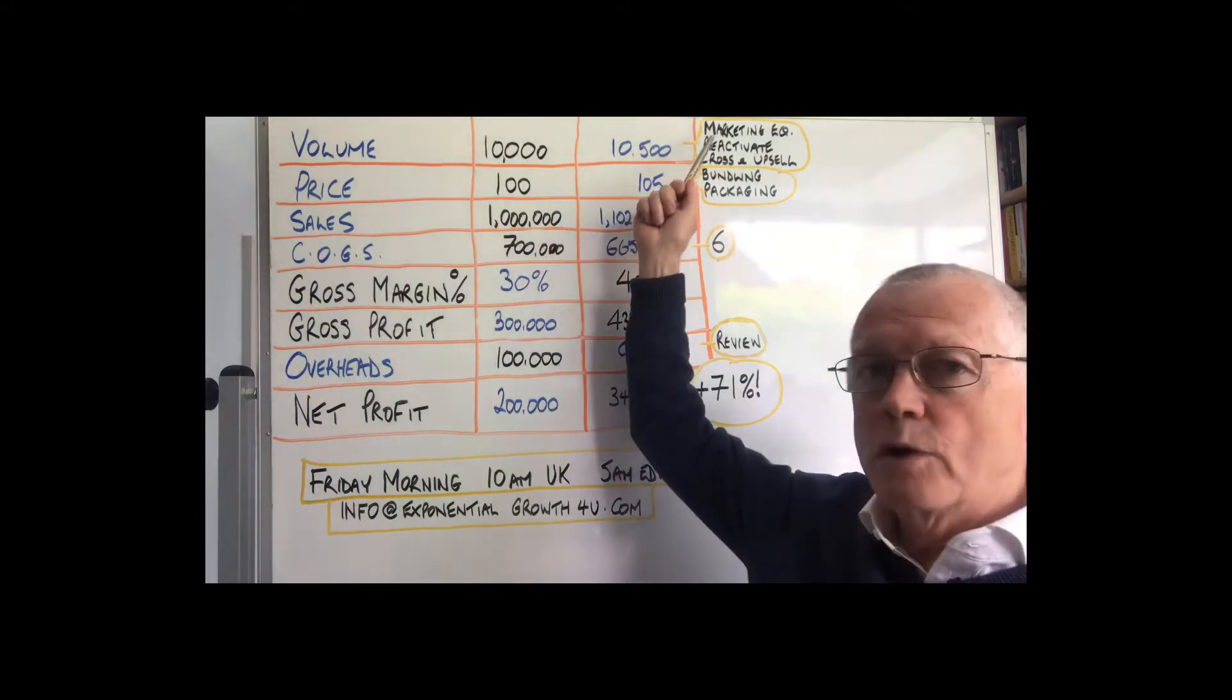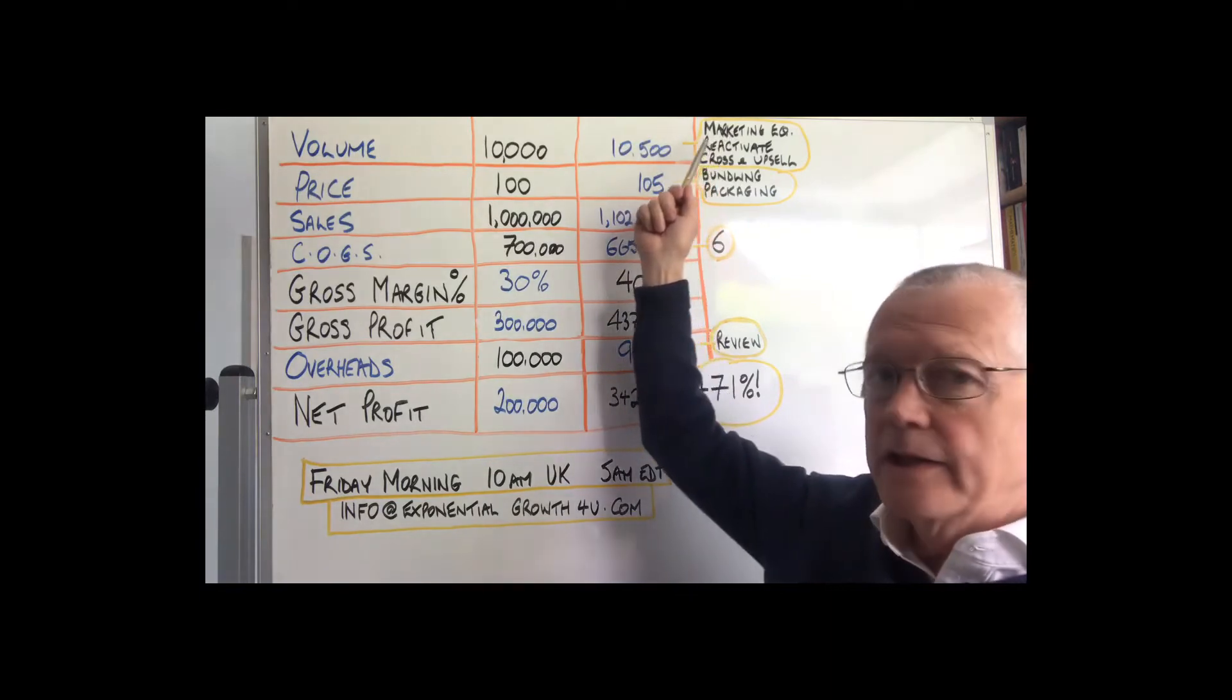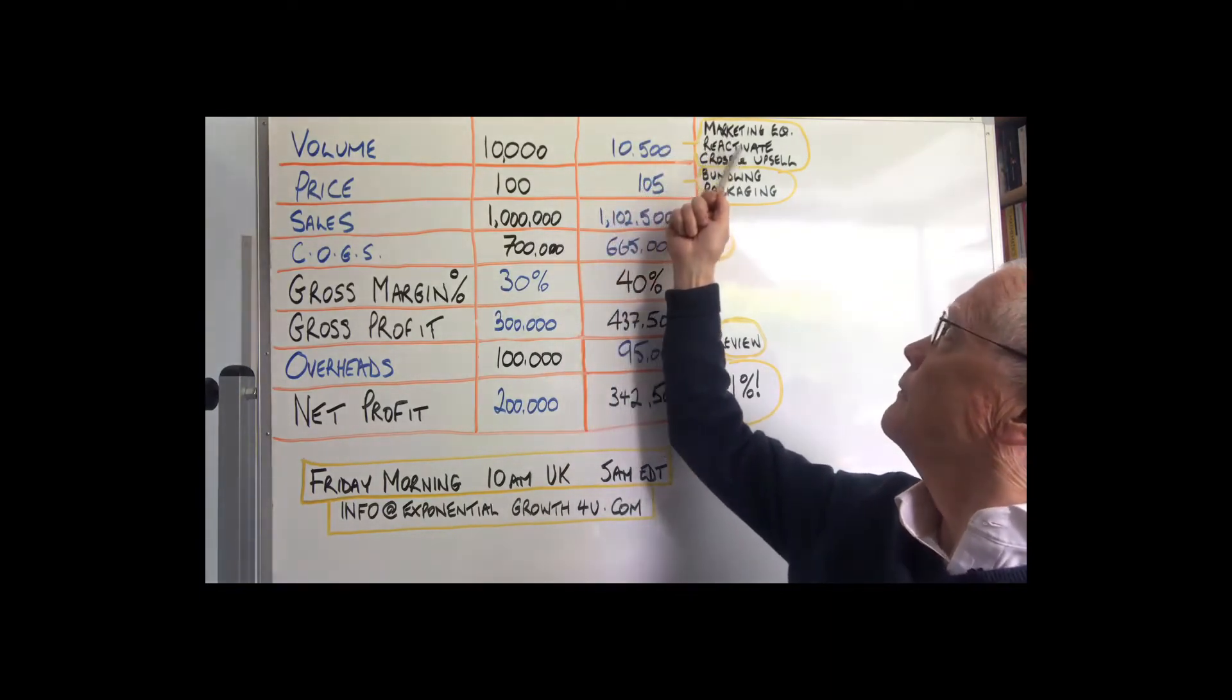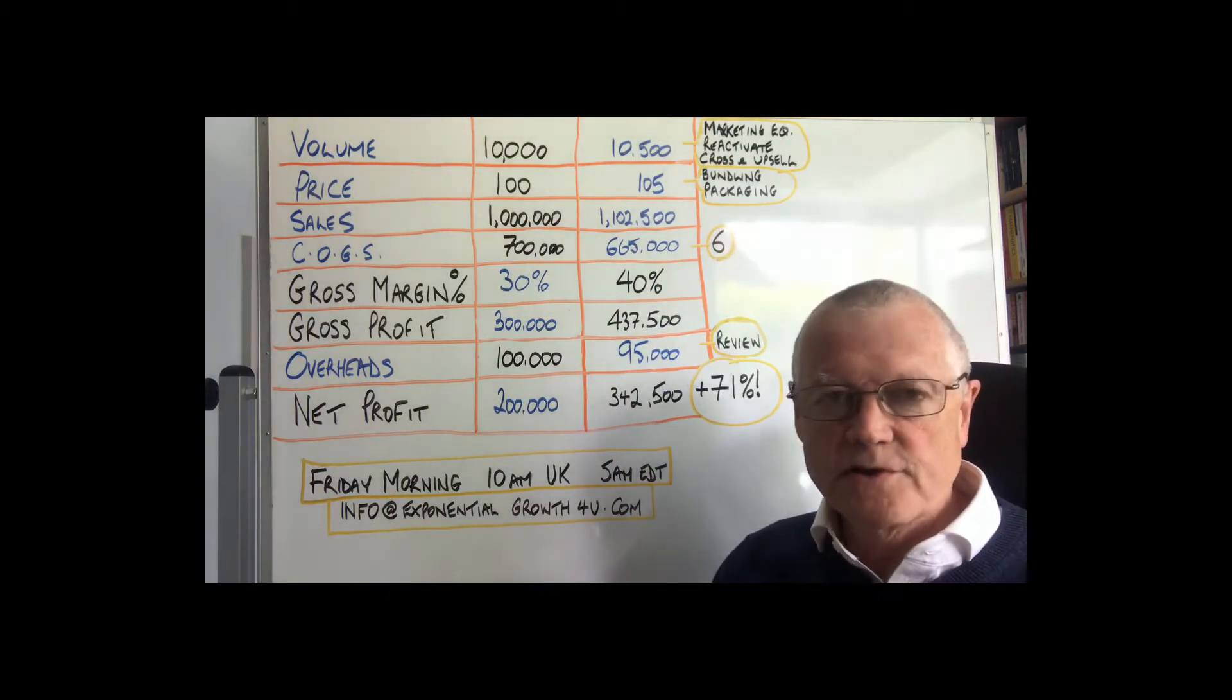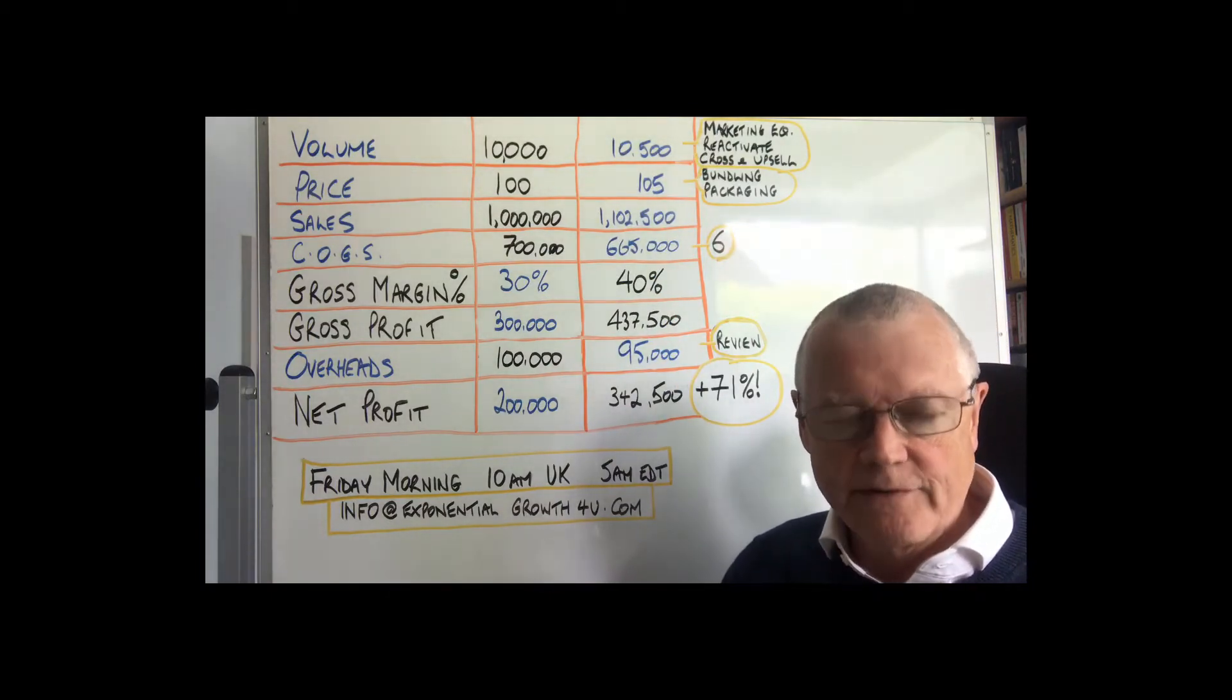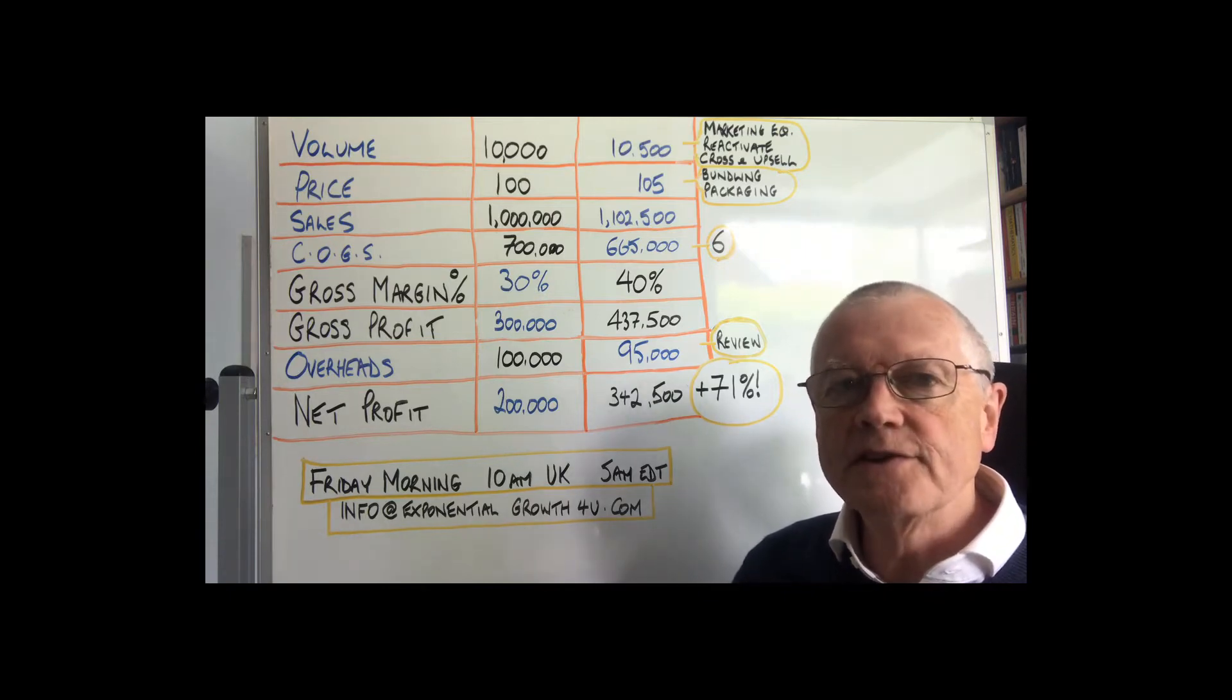Now how could we do that? Well, we could sell more volume by reactivating existing customers, by having cross-sells and upsells in place, because typically 34% of the time if you have a cross-sell or an upsell, people would take advantage of it.